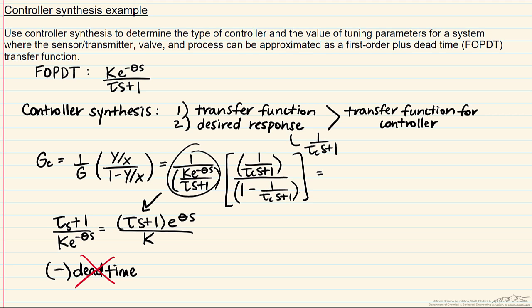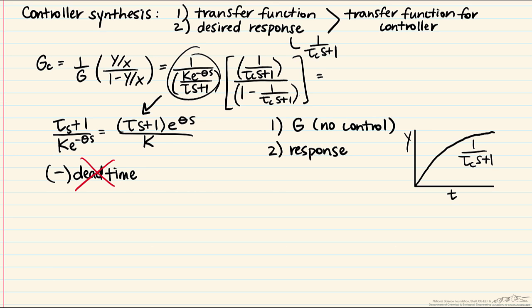What can we do about it? Controller synthesis takes in two things: the transfer function G, over which we have little control since it describes how the process acts, and the desired response, which we do have flexibility over because we chose it. Recall we set the response as 1/(τc·s+1). However, if our process has dead time, it makes no sense for our response to occur instantaneously. So we need to change our response so that it includes dead time.